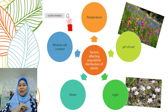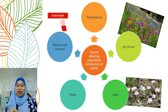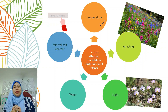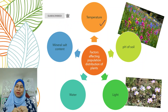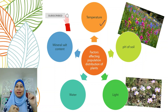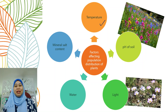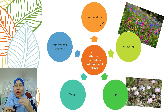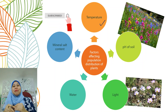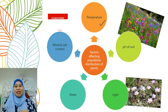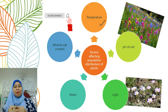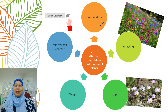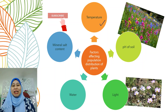We are going to see the factors that affect the population distribution of plants. First, temperature. The optimal temperature for plant growth is between 25 to 30 degrees Celsius, because at high temperature, the enzyme in plants will denature. Many life processes in plants depend on enzymes, so when the enzyme denatures, the processes will be disrupted — among those is photosynthesis. In low temperature, it will cause enzyme activity to slow down. So the optimum temperature should be between 25 to 30 degrees Celsius.